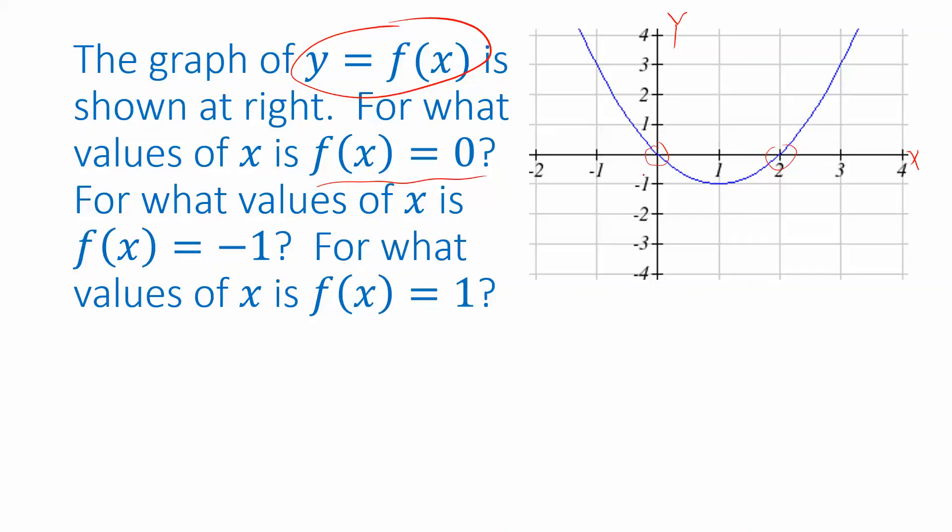So, based on this graph, we would estimate that f of x is 0 when x is, at this point, it looks like when x is 0, and at this point, when x is 2.